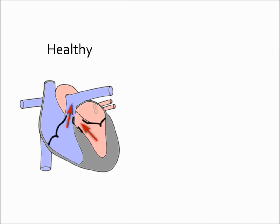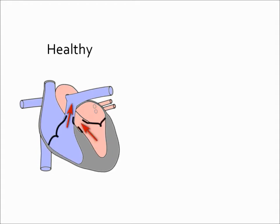The mitral valve is one of the four valves of the human heart and separates the left atrium from the left ventricle. Serving as a passive check valve, it is forced closed during systole, thus enabling the efficient ejection of oxygenated blood from the heart.